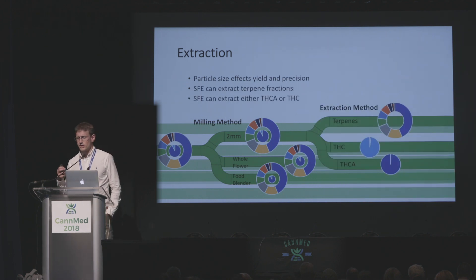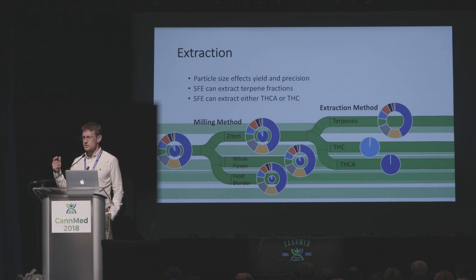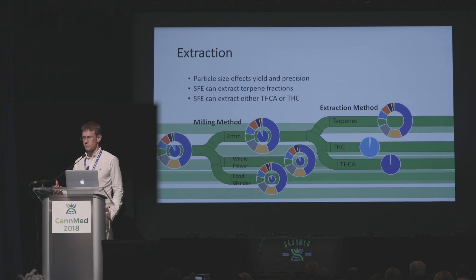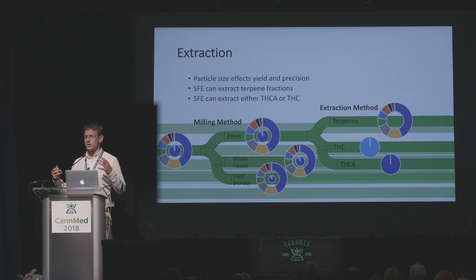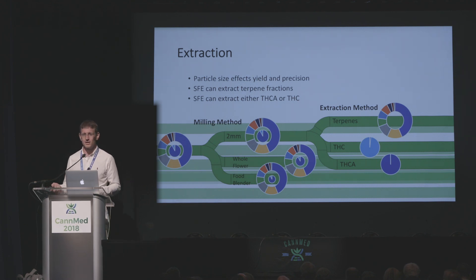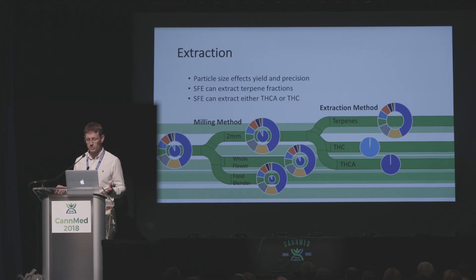In the extraction itself — shown here for supercritical CO2 extraction — you can really modulate what you extract. I can pick out just the terpenes, I can pick out just the neutral cannabinoids like THC, or I can extract THC acid, the acid form, and have that relatively purified or enriched. So you can't just say, you took Sour Kush and extracted it with CO2 — you still don't know what you actually got out. You can't go from one vendor to the next; they probably don't use the same methods.